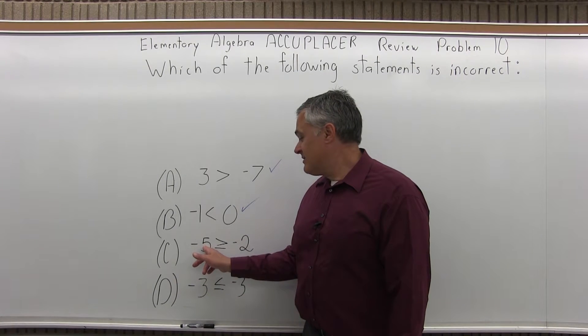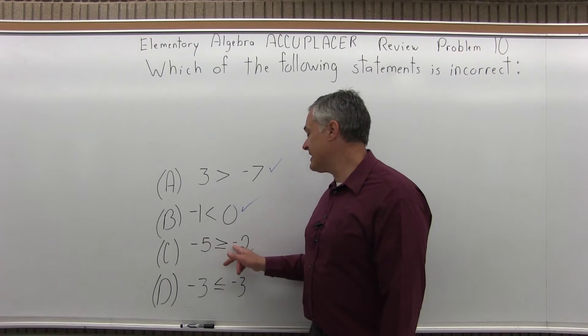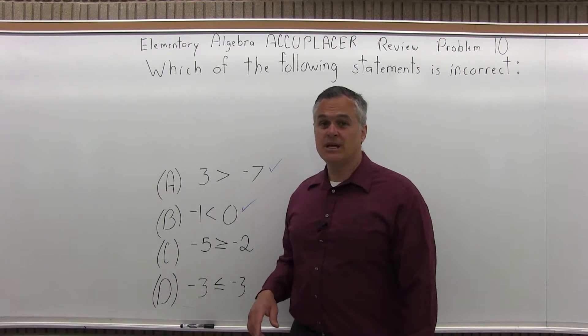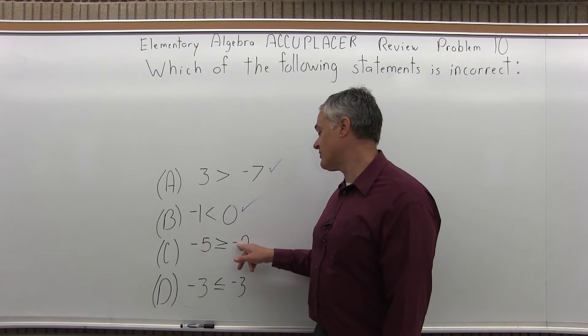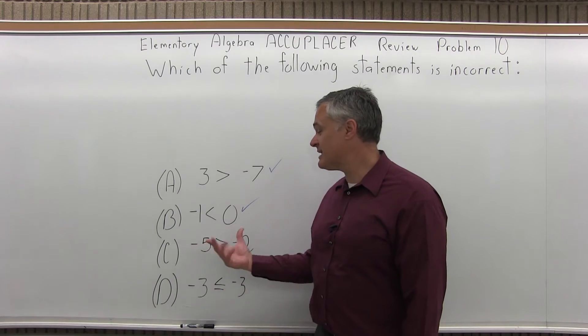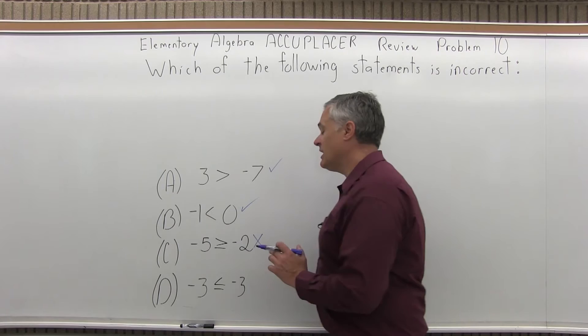Option C, negative five is greater than or equal to negative two. Negative five is not greater than negative two. It's like saying a temperature of five below zero is warmer than a temperature of two below zero. It's not. Because they're negatives, you have to pay attention. So option C is the one that's incorrect.